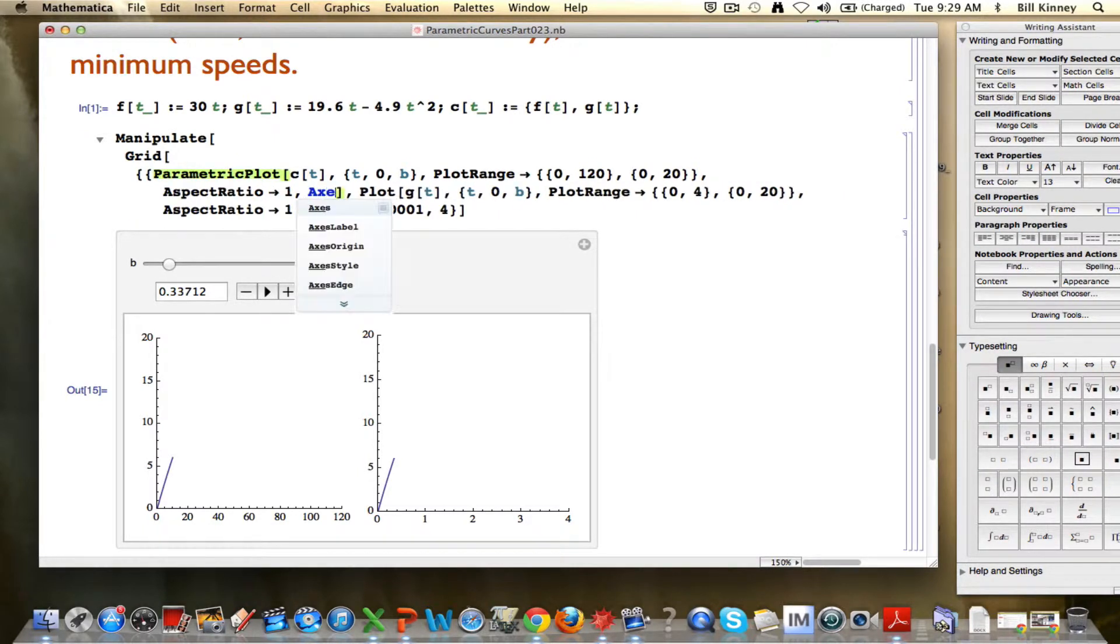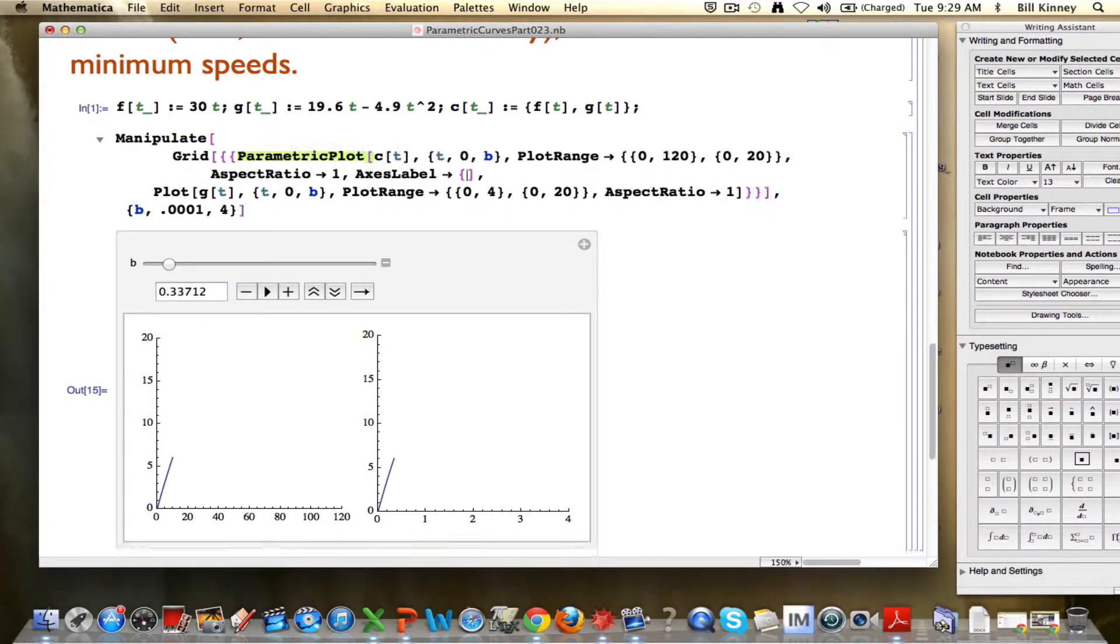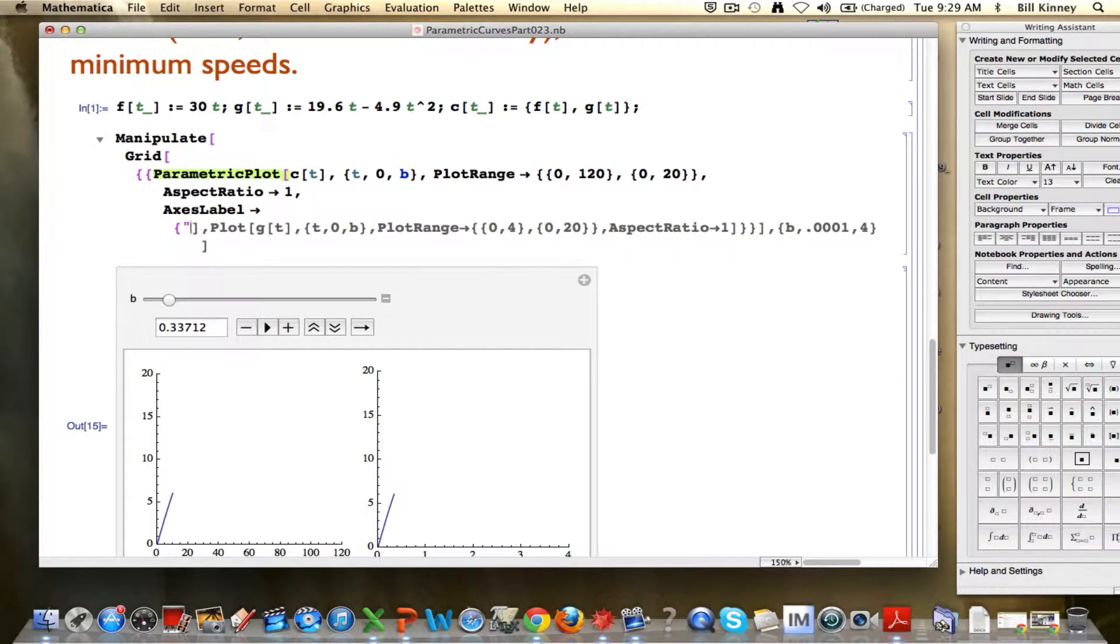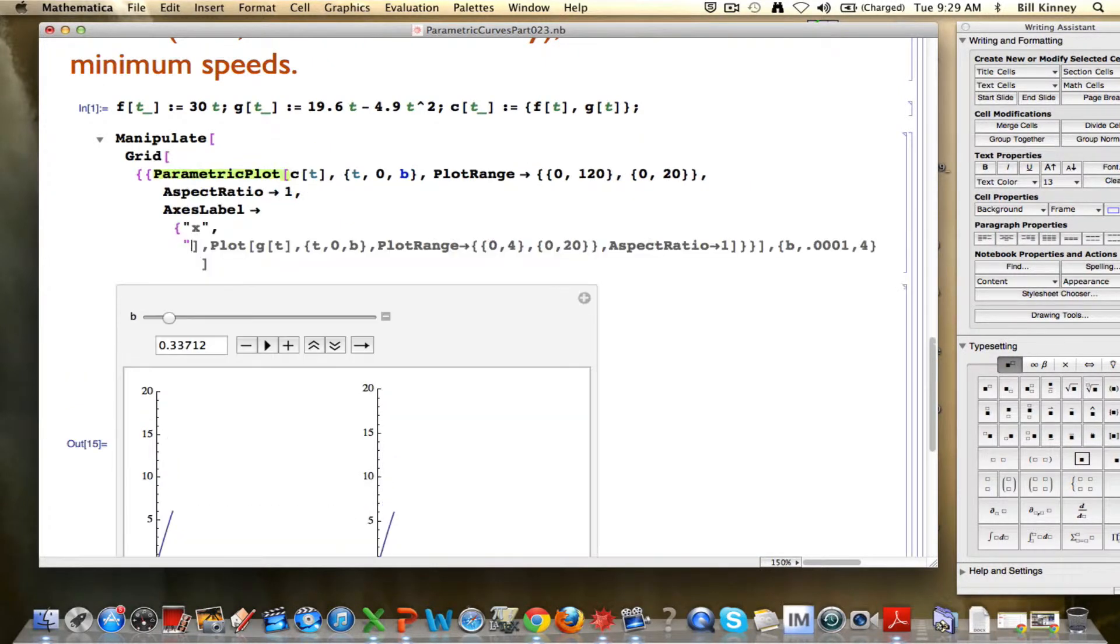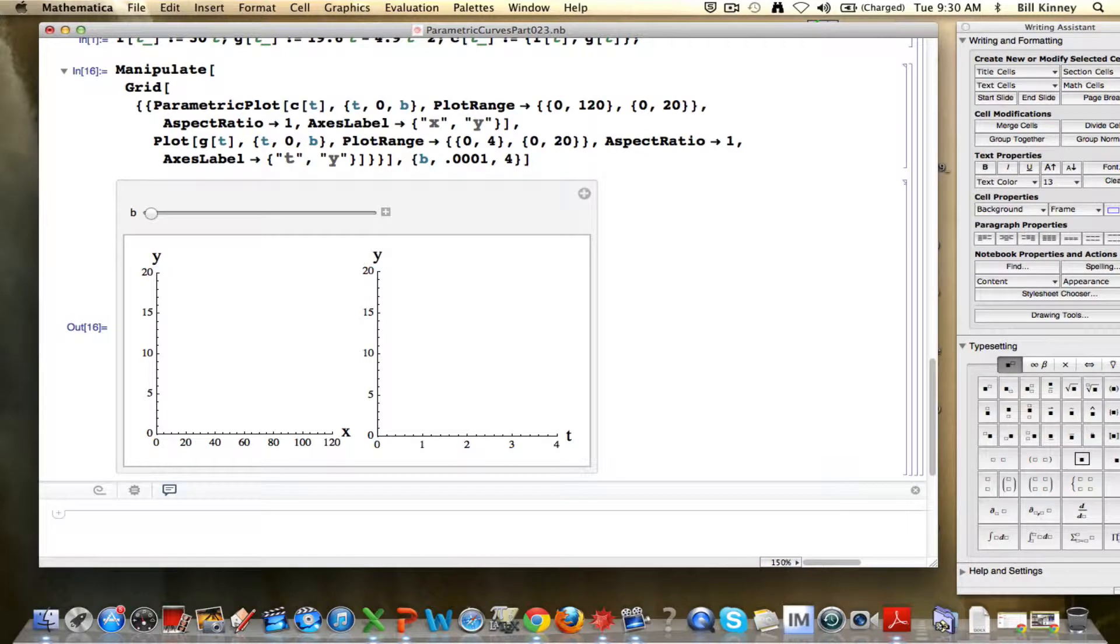So let's add another option, axes label. For the graph on the left, x is horizontal, y is vertical. Let's make those bigger. And then for the graph on the right, t is horizontal and y is vertical. So now we've got the right labeling.